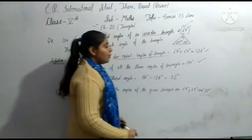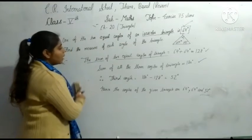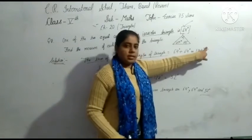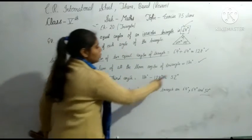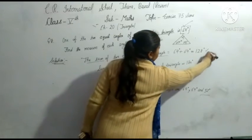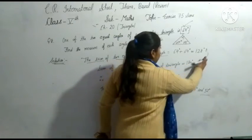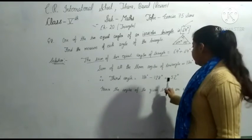Now what is third angle? We have two angles already. To find out the third angle, we have two angles, so we subtract.